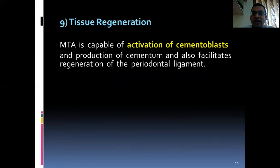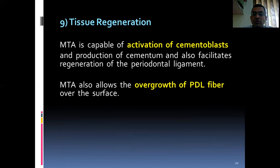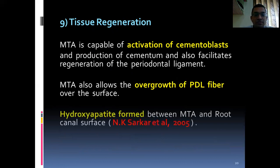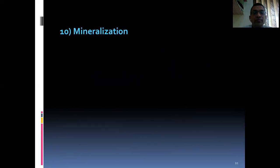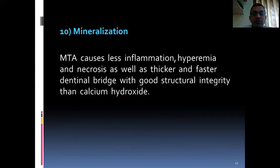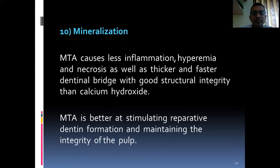MTA is capable of activation of cementoblasts and production of cementum, and also facilitates regeneration of the periodontal ligament. MTA also allows the overgrowth of periodontal ligament fibers over the surface. Hydroxyapatite is formed between MTA and root canal surface according to Sarkar et al. 2005. Mineralization: MTA causes less inflammation, hyperemia, and necrosis, as well as thicker and faster dental bridge formation with good structural integrity than calcium hydroxide. MTA is better at stimulating reparative dentin formation and maintaining the integrity of the pulp.